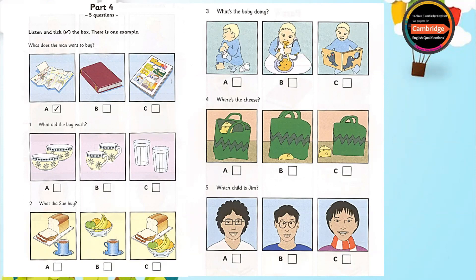2. What did Sue buy? We didn't have any bread for breakfast this morning. I went to the market and bought some. Good. And we needed some coffee. Did you buy any? Sorry. No, I didn't. But I bought some fruit. Oh, right.